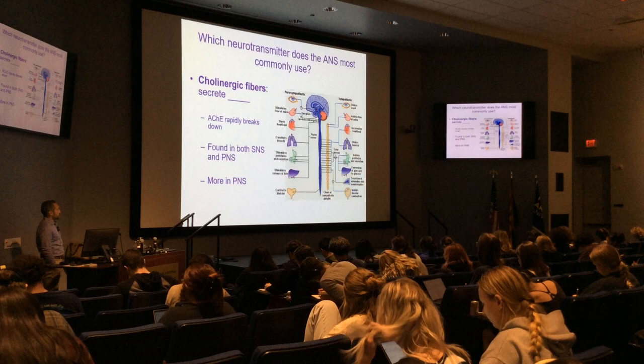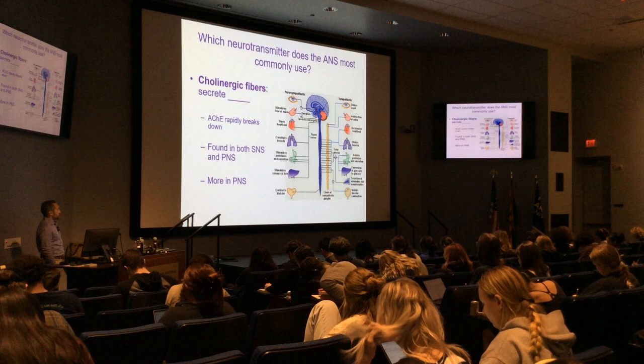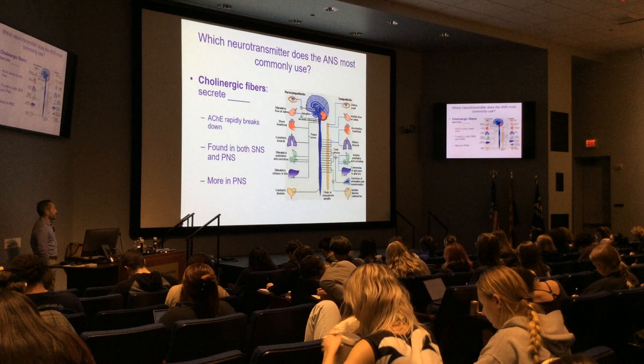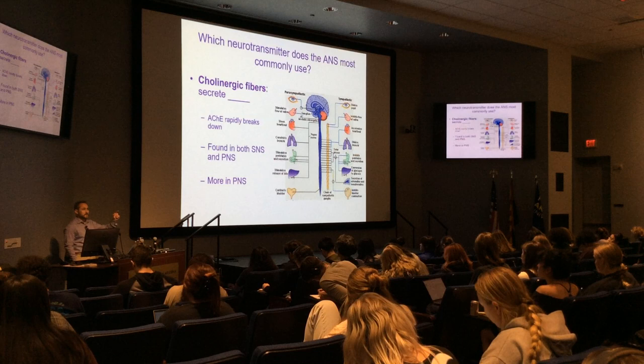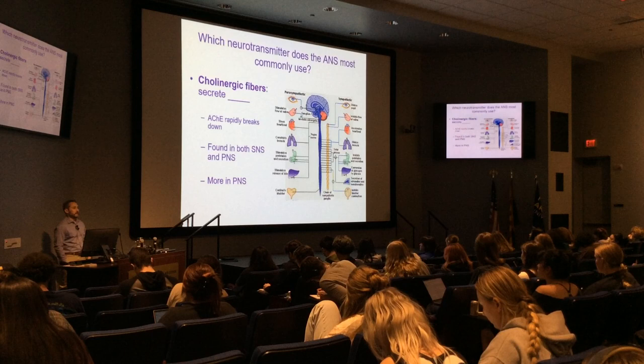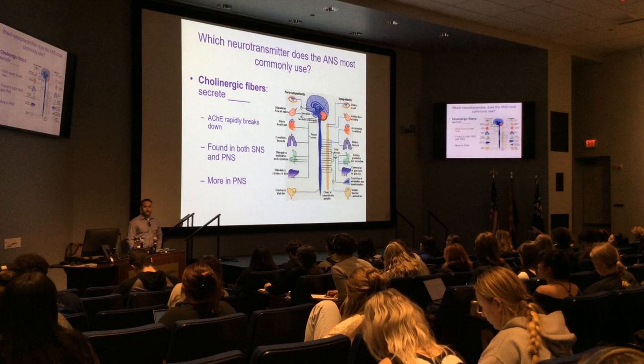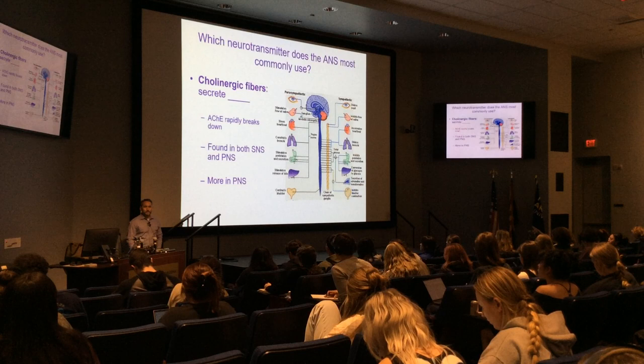Cholinergic fibers are found in both the sympathetic and parasympathetic sides of the autonomic nervous system. However, they're more predominant in the parasympathetic nervous system. When acetylcholine is released into the synaptic cleft, it has a very short half-life — it breaks down rather quickly. Why do you think that is? What's the purpose of a neurotransmitter?